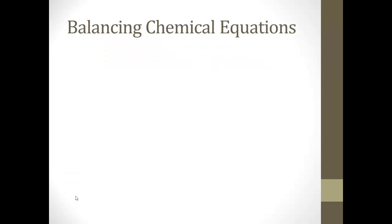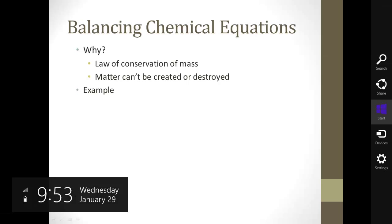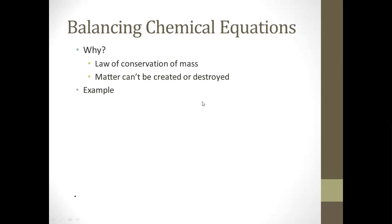All right, that brings us to balancing chemical equations. And the common question is, why do we even have to do this? Well, because of the law of conservation of mass. It says matter can't be created or destroyed. So when we write a chemical equation, we have to keep track of everything. We can't lose anything, and we can't gain.